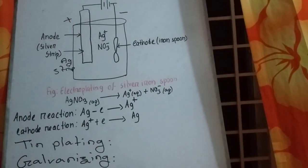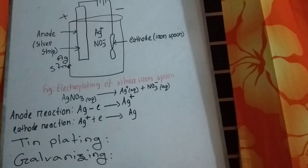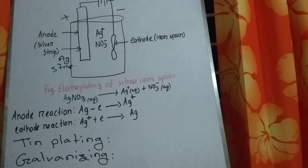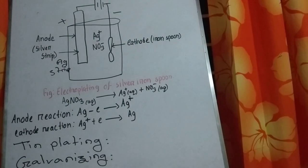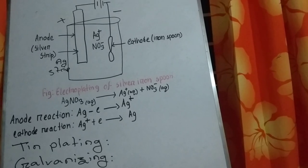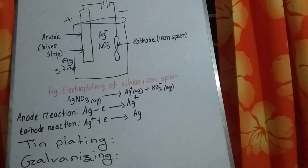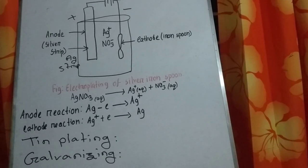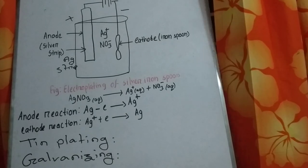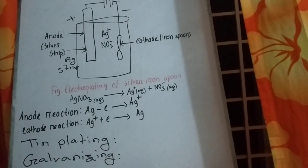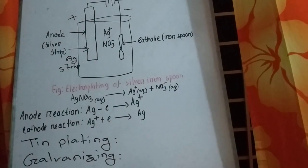Now come to zinc plating and tin plating. The coating of tin on the surface of another metal is known as tin plating. The coating of zinc on the surface of another metal — most of the time on iron — is known as galvanizing.